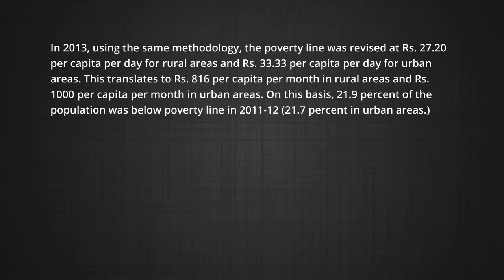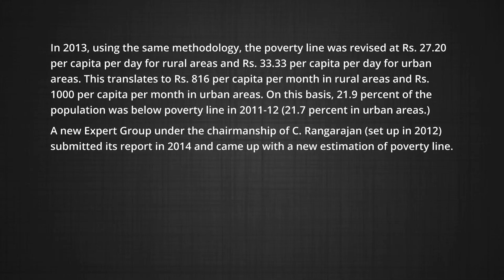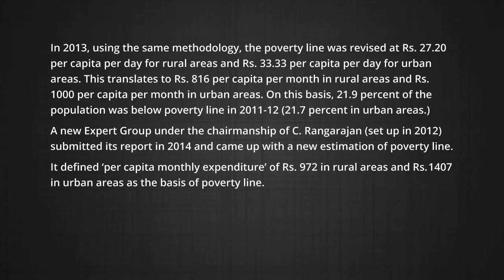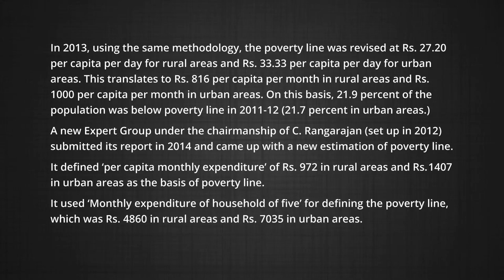On this basis, 21.9 percent of population was below the poverty line in 2011-12, and 25.7 percent in urban areas. A new expert committee under the chairmanship of C. Rangarajan was set up in 2012 and submitted its report in 2014. It defined per capita monthly expenditure of rupees 972 in rural areas and rupees 1407 in urban areas as the basis of the poverty line. It used monthly expenditure of a household of 5 for defining the poverty line, which was rupees 4860 in rural areas and rupees 7035 in urban areas.